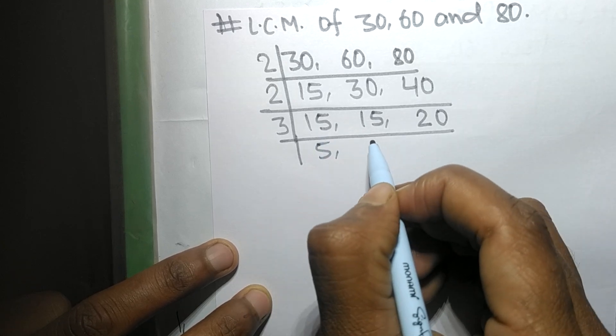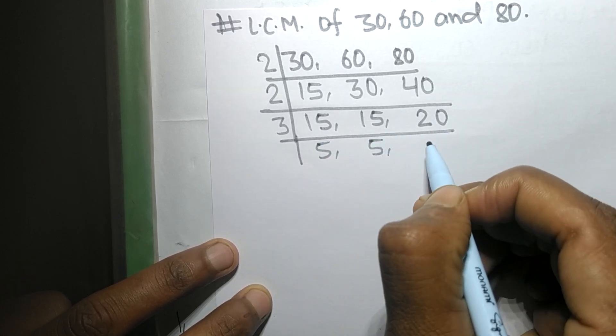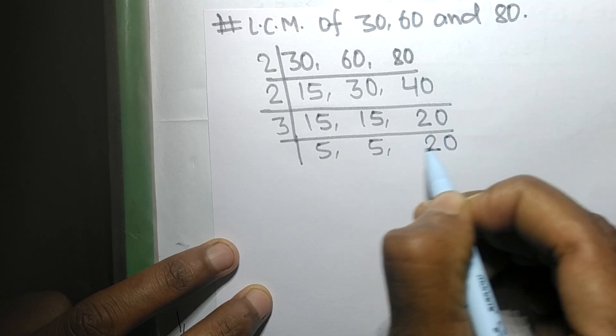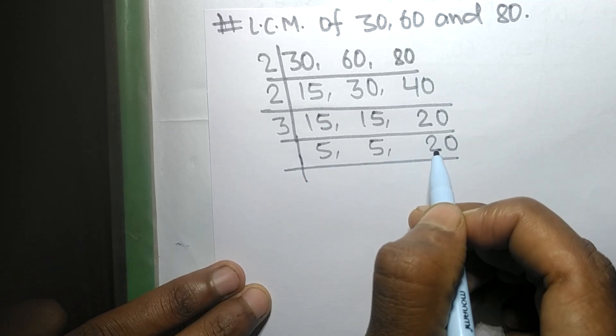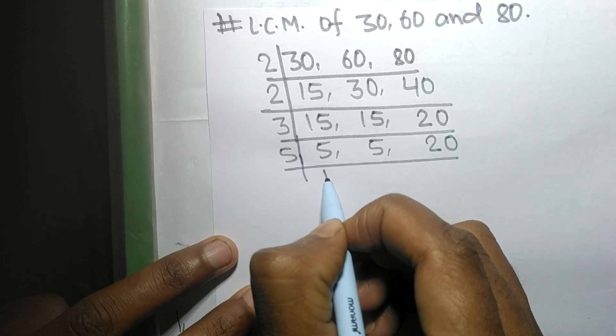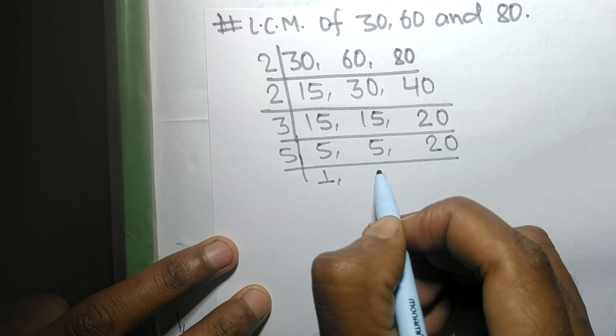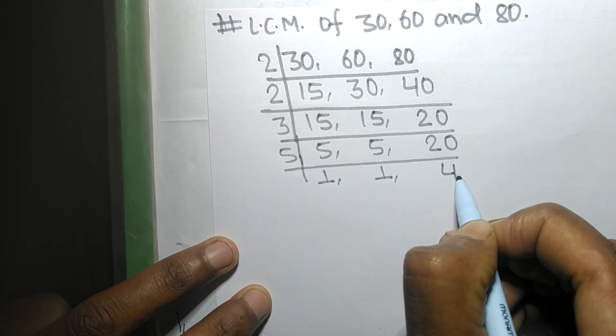3 times 5 mean 15, 20 not divisible so it is same. So now these all numbers are exactly divisible by 5, so 5 times 1 mean 5, 5 times 1 mean 5, and 5 times 4 mean 20.